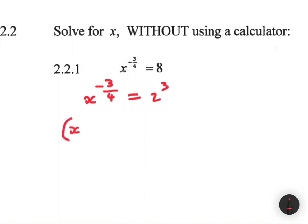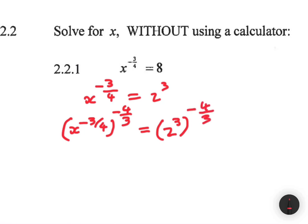We're going to raise both sides to the power minus 4 divided by 3. We want to cancel out the power of x so that we're just left with x. If we do something on the left we must do it on the right. So on the left, 4 cancels with 4, minus cancels with minus, and 3 cancels with 3, leaving just x. On the right, 3 cancels with 3, leaving 2 to the power minus 4.